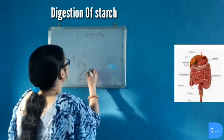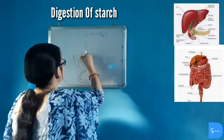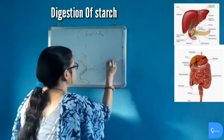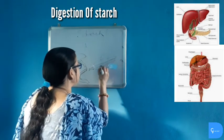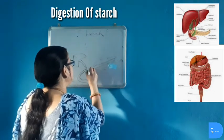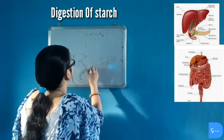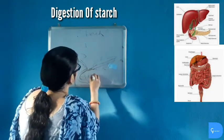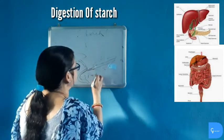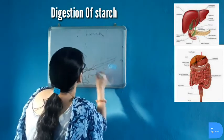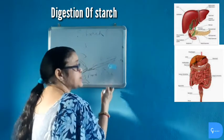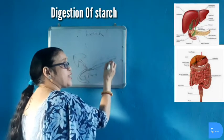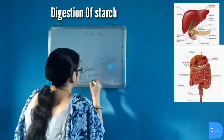In the duodenum, the liver produces bile and bile juice is poured into the duodenum. The pancreas produces the enzyme pancreatic amylase, which acts in an alkaline medium, and is also poured into the duodenum through the common duct. The food is mixed with bile juice, making it alkaline in nature. The pancreatic amylase, which is active only in an alkaline environment, then acts on the remaining starch.